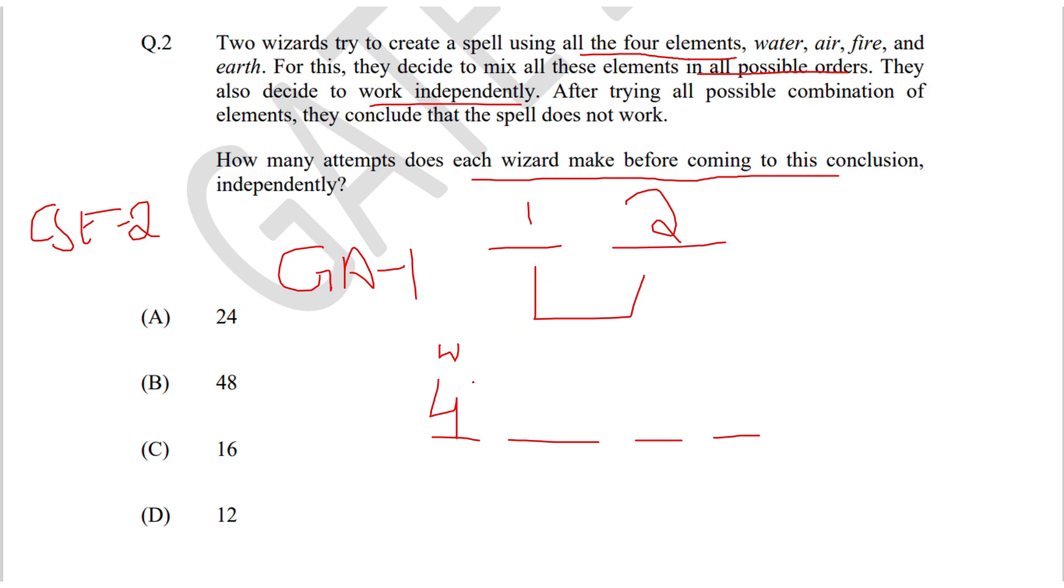If you fill the first blank with any of the four elements, then you can fill the second blank with the remaining three elements. If you fill the first blank with water, you can fill the second blank with either air, fire, or earth. Similarly, you can fill the third blank with two elements and the final one with only one element.